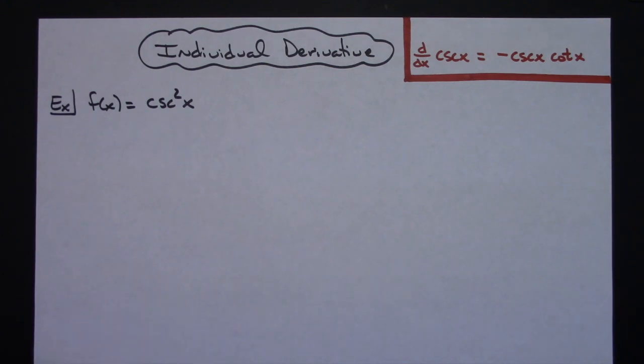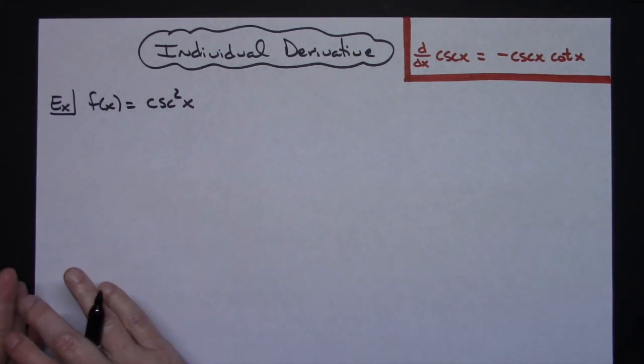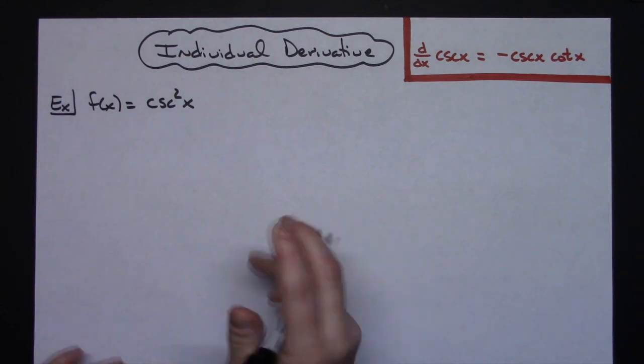If we're doing a trig derivative with chain rules, we need to identify where the inside function is and where the outside function is.